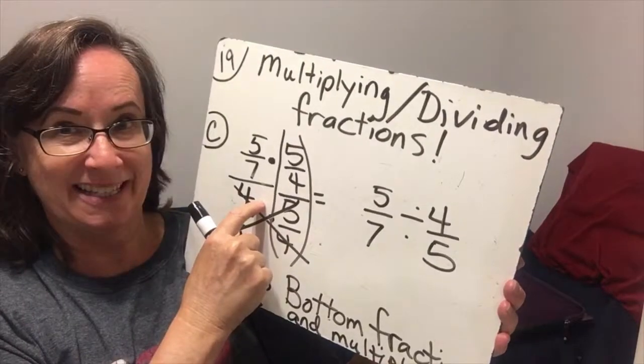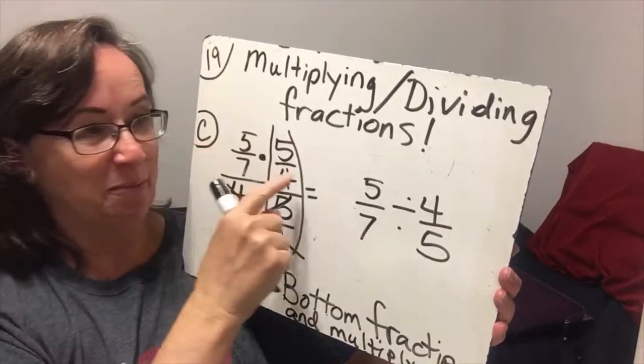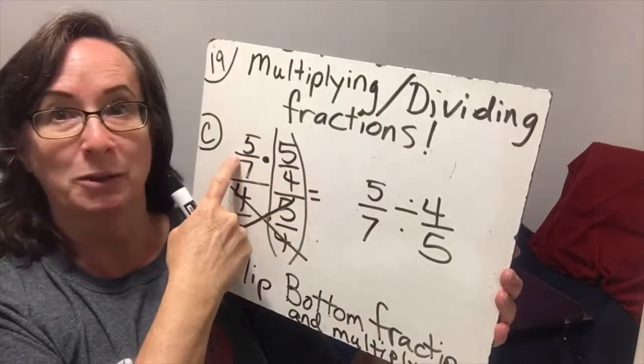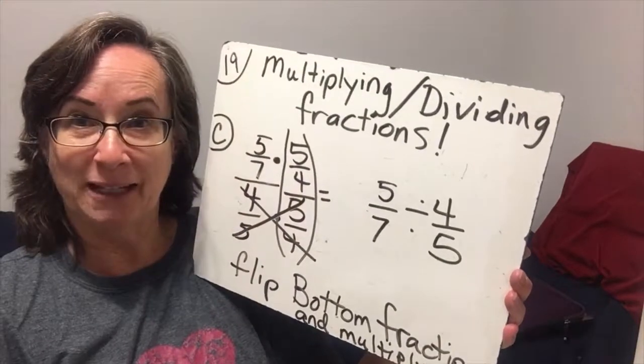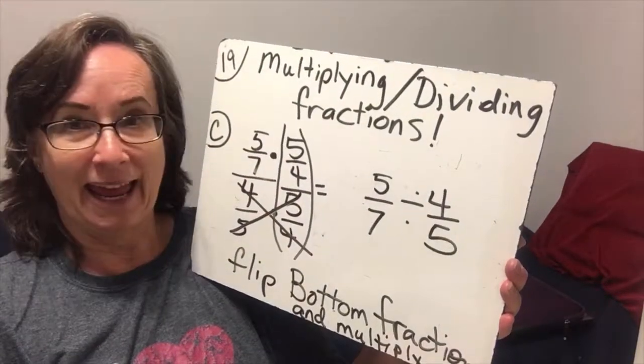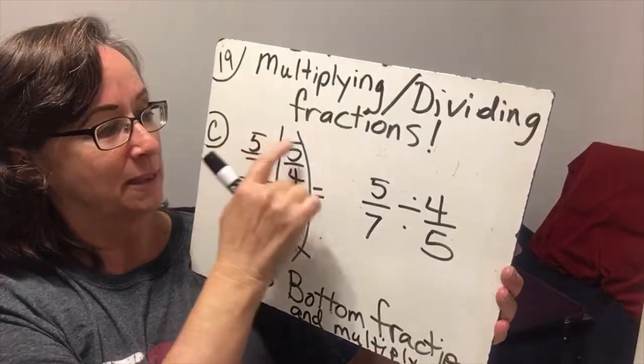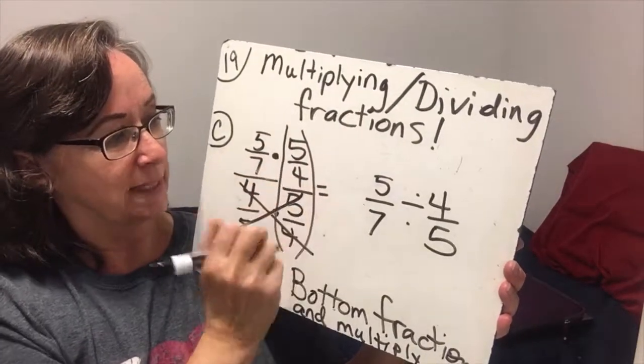And guess what I have as an equivalent expression? 5 sevenths times the reciprocal of the denominator. So if I flipped this over and multiplied it by the numerator fraction, I would have my answer.